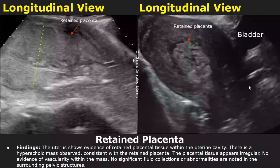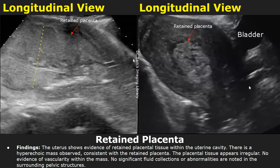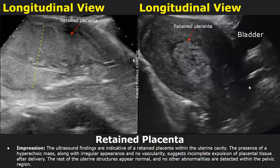Now we will look at retained placenta. There is a hyperechoic mass observed consistent with the retained placenta. The placental tissue appears irregular, with no evidence of vascularity within the mass, and there were no significant fluid collections or other abnormalities within the pelvis. In the impression, you can mention the hyperechoic mass with irregular appearance and no vascularity, which suggests incomplete expulsion of placental tissue after delivery.